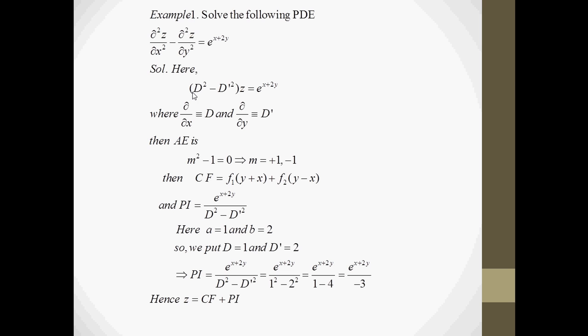We take an example: del²z/delx² minus del²z/dely² equals e to the power x plus 2y. We convert this equation into d and d' form by applying del/delx as d and del/dely as d'. We get d² minus d'² times z equals e to the power x plus 2y.